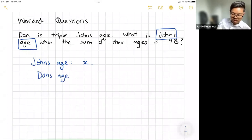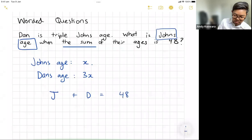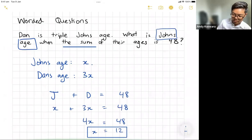Now they told us something about Dan's age. Dan's age is actually triple John's age, so in other words, triple just means times 3, or in this case, if it's x, then it will be 3x. And now it says the sum, so the sum is just a fancy word to say plus. That means John's age plus Dan's age should equal to 48, so in other words, x plus 3x should equal to 48. And at this point here, just collect your like terms, 4x equals to 48, x equals to 12.